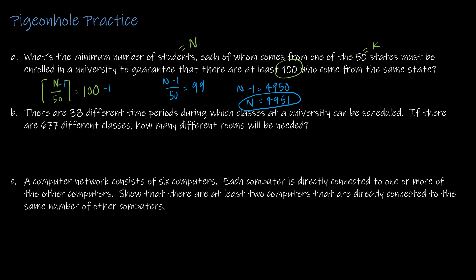For B, there are 38 different time periods during which classes at a university can be scheduled. If there are 677 different classes, how many different rooms will be needed? So we have 38 different time periods and 677 classes. This is a straight up application. So I'm going to take 677 divided by 38, which gives me 17.8157. I know that that rounds up to 18. So I will need 18 different rooms in order to make that scheduling work.